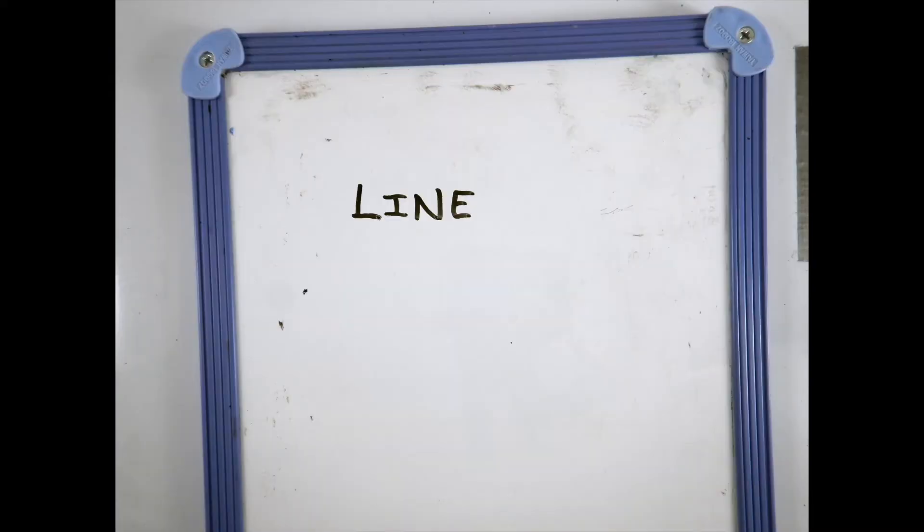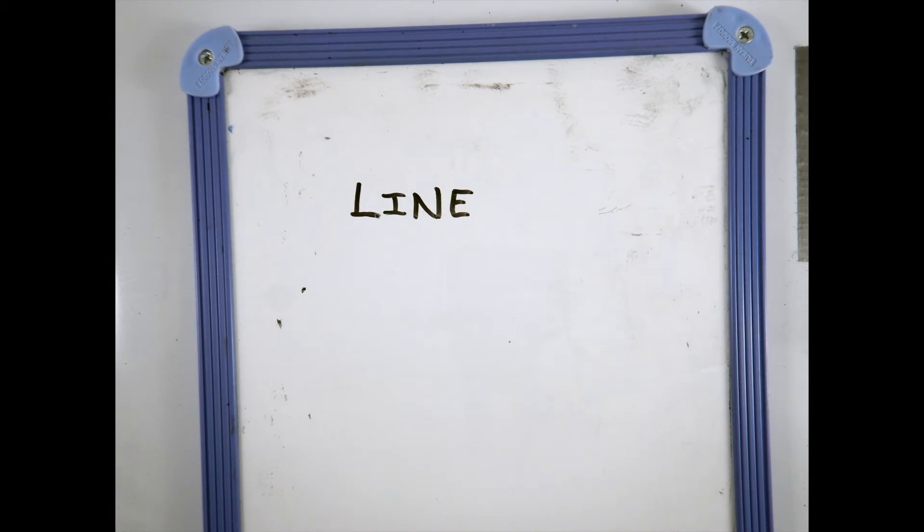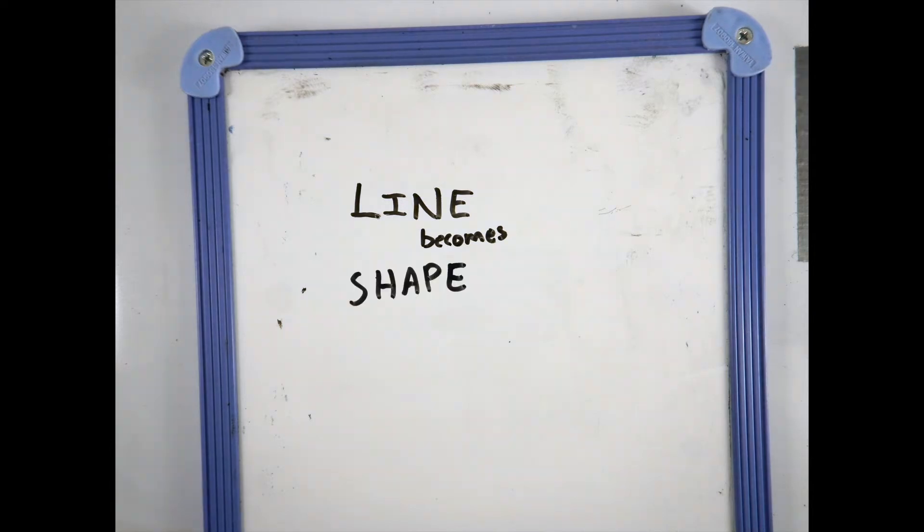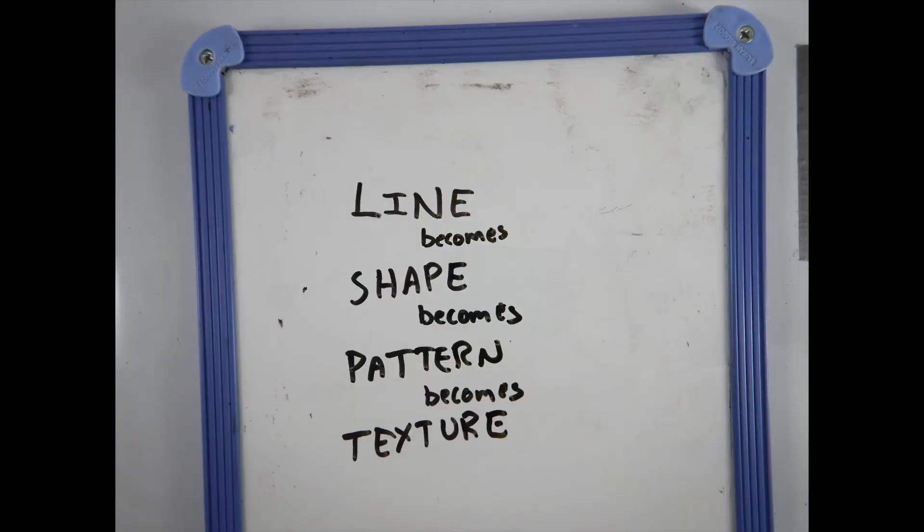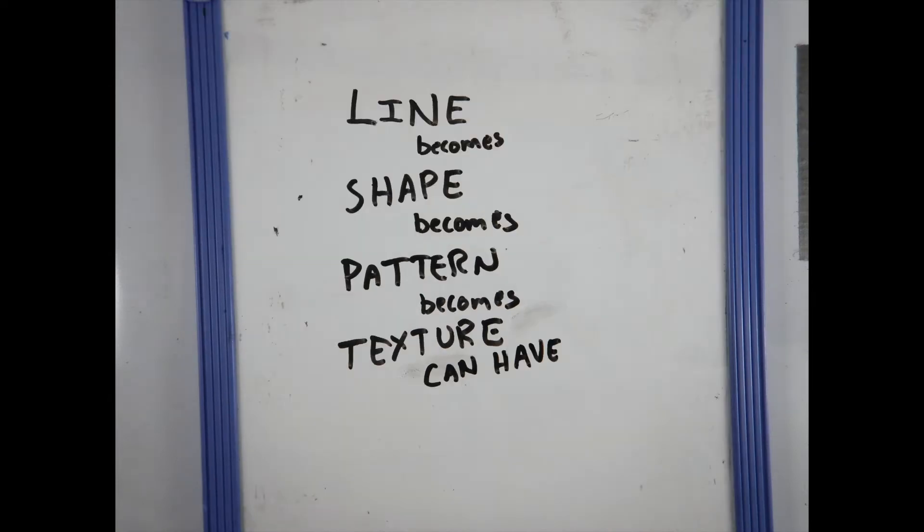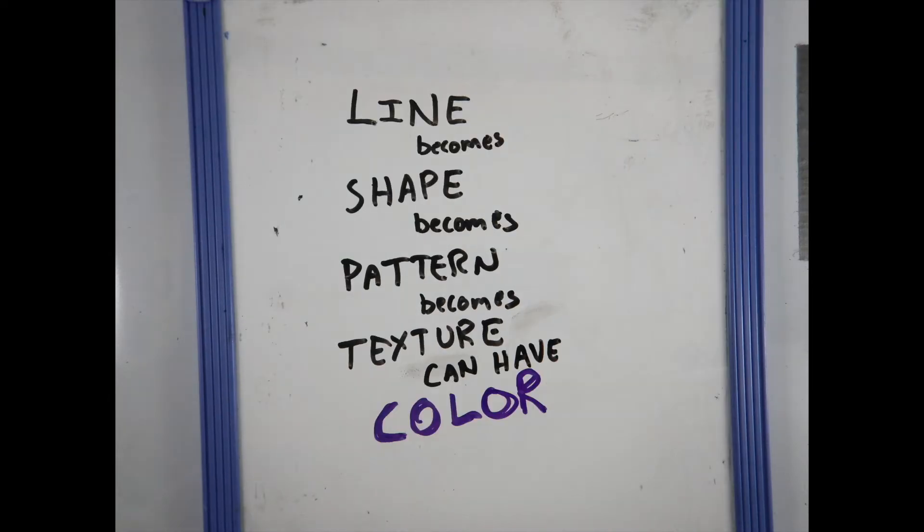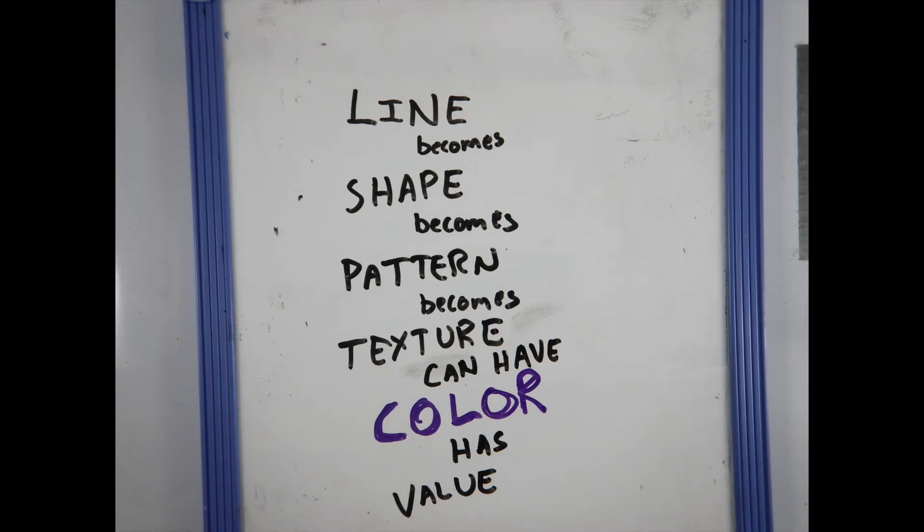Mr. Morris likes to start a lot of his classes by chanting the elements of design, so let's do it together right now. Lines become shapes. Shapes become pattern. Pattern becomes texture. Texture can have color. Color has value, and value shows form.